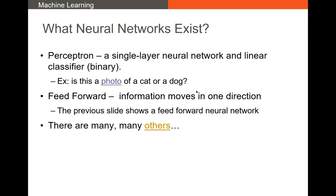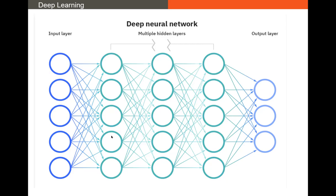Feed forward networks are a straightforward type of neural network where data just flows forward through each hidden layer. There are a lot of other neural networks out there, and you can have many, many hidden layers. These models haven't existed for a long time because there's just a huge amount of data being analyzed.